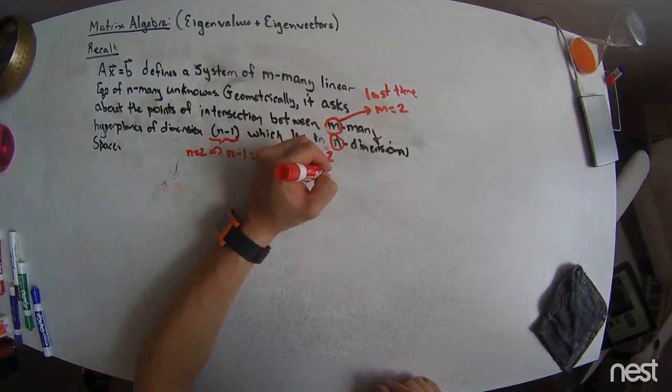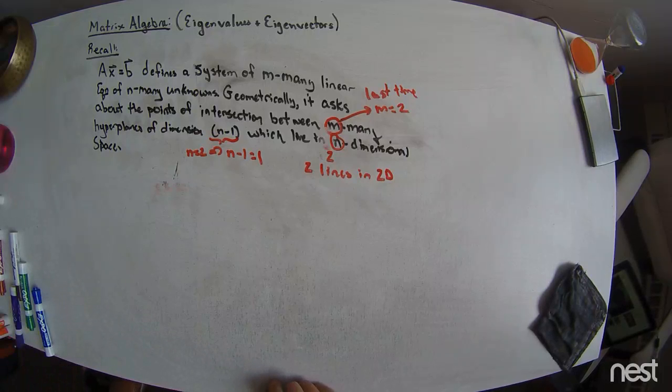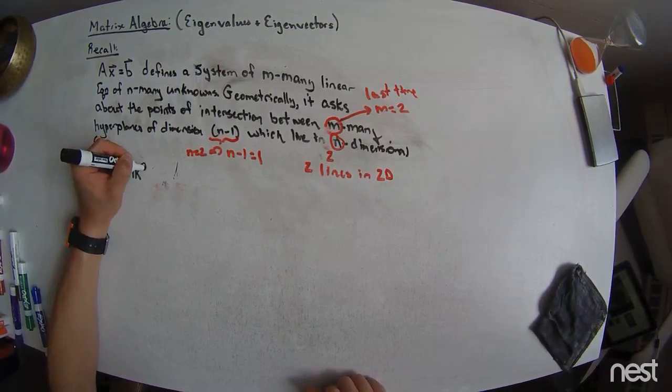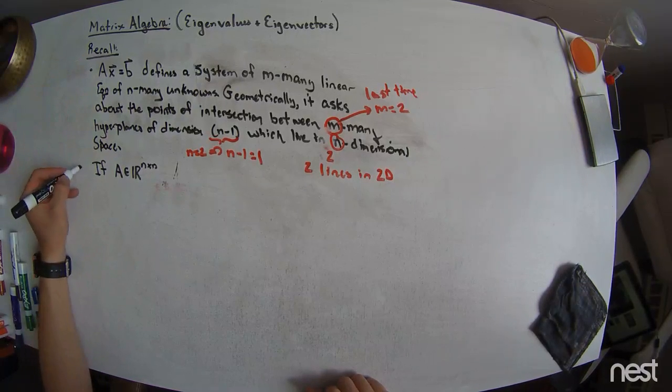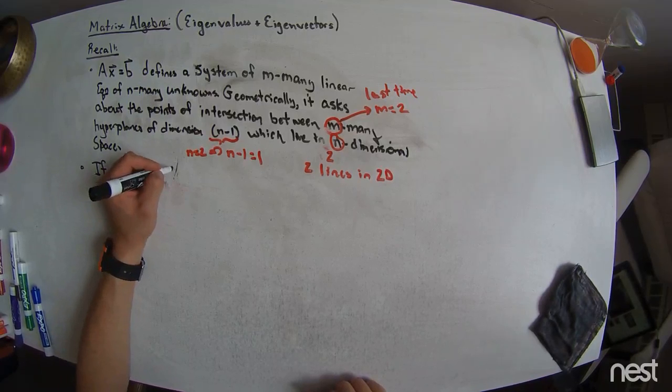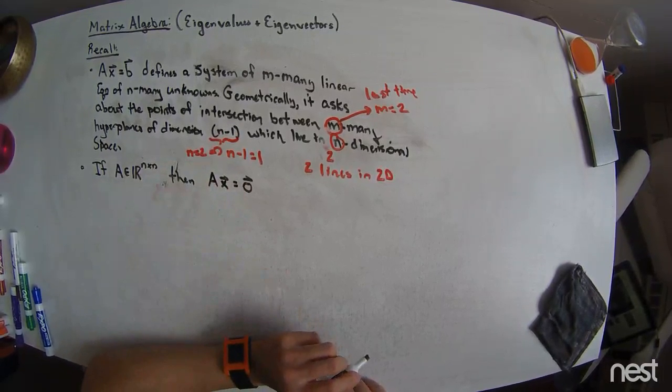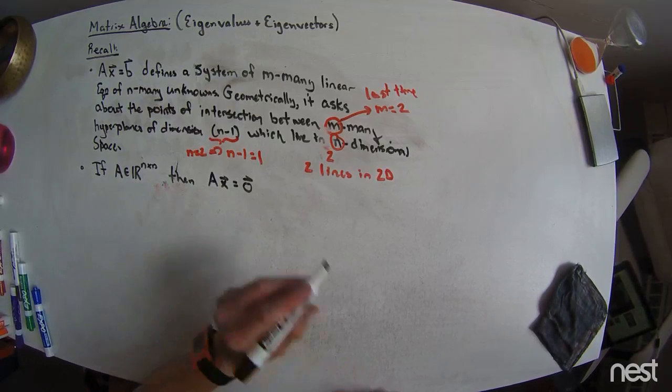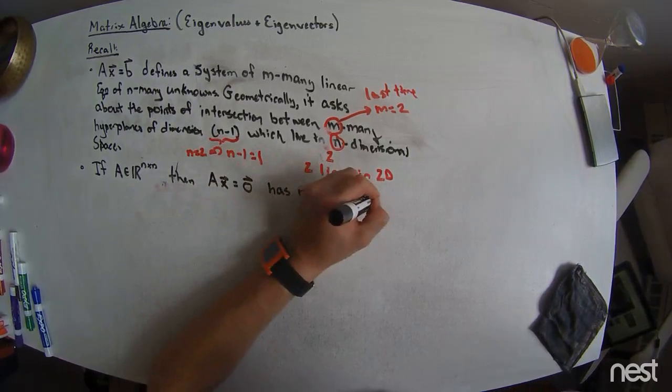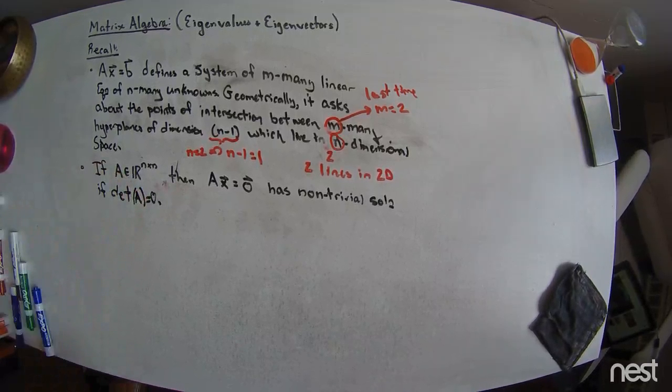So, we had two lines in 2D last time. And so, we also had this idea that if A was square, and we didn't prove this last time, but it's certainly true. We showed it to be true for two-by-twos, where things are always nice and straightforward. But if A is square, as many rows as columns, then A times X is equal to zero has non-trivial, non-zero solutions if the determinant of A is equal to zero. Those are the bits that we need.